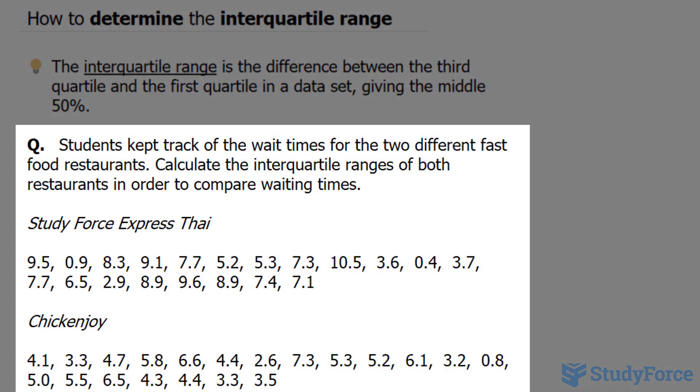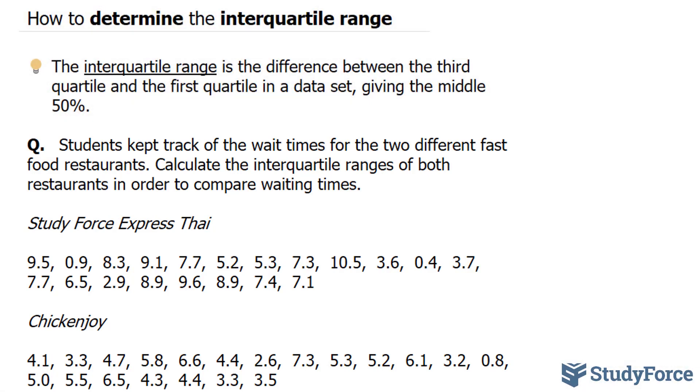The question reads, students kept track of the wait times for two different fast food restaurants. Calculate the interquartile ranges of both restaurants in order to compare waiting times. So the two restaurants that we have is one called Study Force Express Thai and another one called Chicken Enjoy.